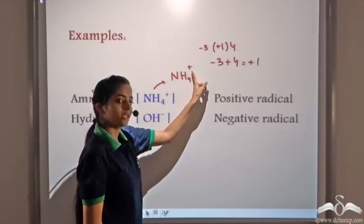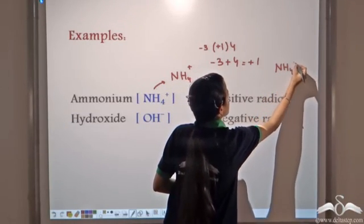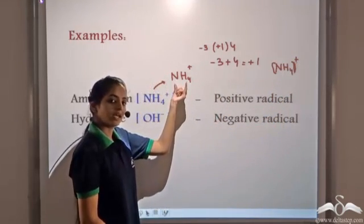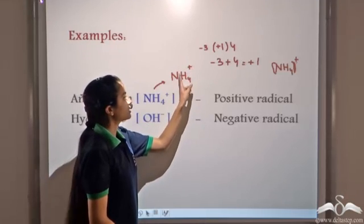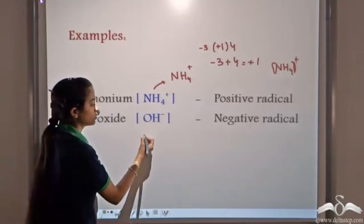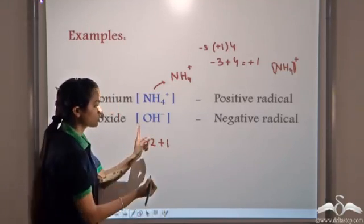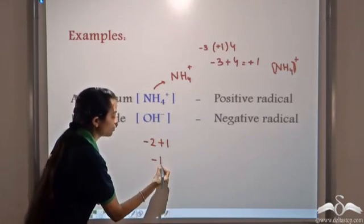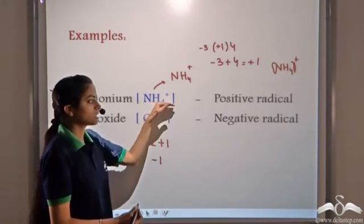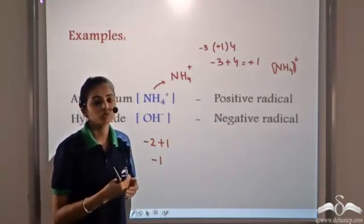The ammonium radical can be represented as NH4+. This plus charge shows it is for the entire ammonium radical. Similarly, for OH-, the valency of oxygen is -2 and valency of hydrogen is +1, so the overall charge becomes -1. The hydroxide radical has an overall -1 charge. So ammonium is a positive radical and hydroxide is a negative radical — radicals can be both positive or negative.